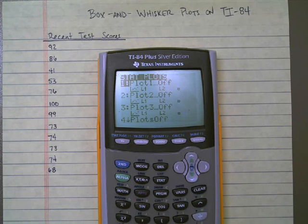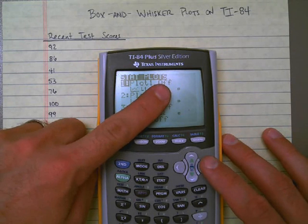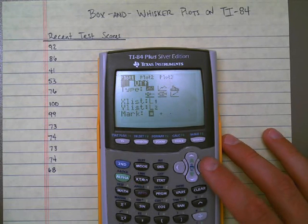Everything's color-coded on the calculator, and that takes us into our statistics plotting menu. Now, I'm just going to work with plot 1 here. Notice right now, the plot 1 is turned off. So I'm going to hit enter while I'm highlighting it, and I'm going to turn it on.